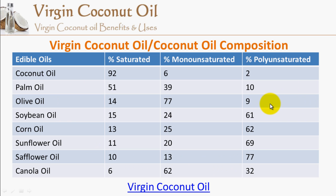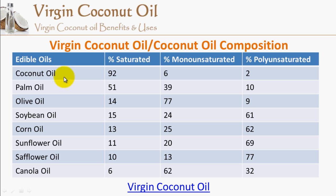One important point: when we call an oil like olive oil a monounsaturated oil, it doesn't mean it has no saturated or polyunsaturated fatty acids. That is just a simplified way of naming things — an oversimplification of what is actually in the oil. Similarly, coconut oil has always been labeled as a saturated oil, which in broad terms is not wrong because it has 92% saturated fatty acids with a fairly small amount of unsaturated fatty acids.